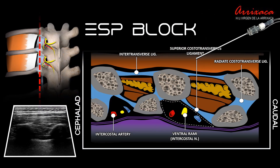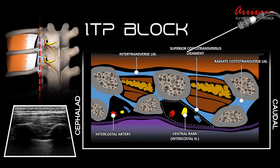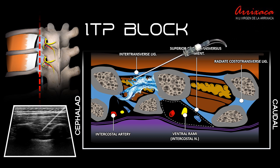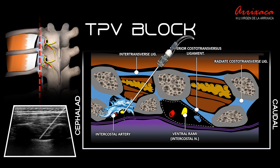To perform an ESP block, the needle tip should make contact with the periosteum of the transverse process, depositing the anesthetic between this and the posterior fascia of the erector spinae muscle. The intertransverse block involves the injection of local anesthetic into a deeper plane inside the retrocostal transverse space between two adjacent transverse processes and above the internal intercostal membrane without penetrating it. In the paravertebral block, the internal intercostal membrane is penetrated and the local anesthetic is injected directly into the paravertebral space.